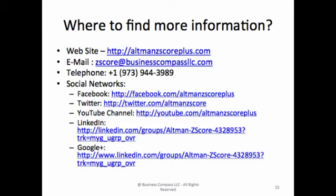Where to find more information? Our website address is altmanzscoreplus.com and our email address is gscore@businesscompassllc.com. Phone number is 973-944-3989. We are present on social networks such as Facebook, Twitter, we have a YouTube channel, a LinkedIn group, and a Google Plus page. For more information about Altman G-Score Plus, please visit altmanzscoreplus.com.